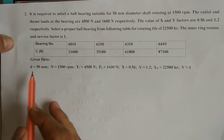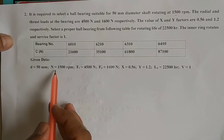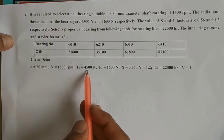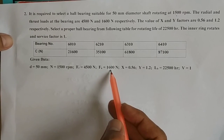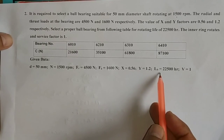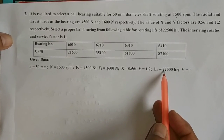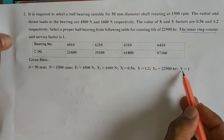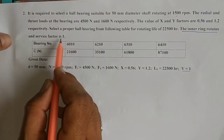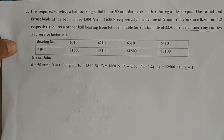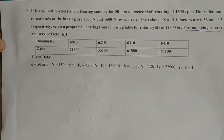Given data: diameter D = 50 mm, speed N = 1500 RPM, radial load = 4500 Newton, axial load = 1600 Newton, X = 0.56, Y = 1.2, life in hours = 22,500 hours, inner ring rotates so V = 1, service factor S = 1. We have to find the dynamic load carrying capacity and from that select the bearing number.